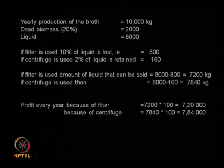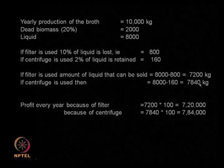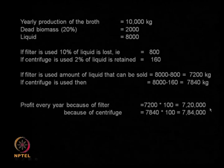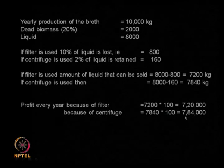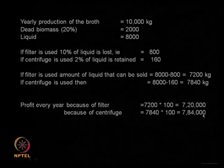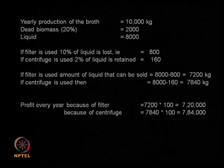Profit every year if I use a filter: 7,200 kg × 100 rupees per kg = 7,20,000 rupees. If it is a centrifuge, I make 7,84,000 rupees. So every year - year 1, year 2, year 3, year 4 - I will make these profits. But then I will have maintenance cost for the centrifuge of 80,000 per year, and maintenance cost for the filter of 50,000 per year. And in year 0, I have bought the centrifuge for 1.5 lakhs and the filter for 1 lakh.